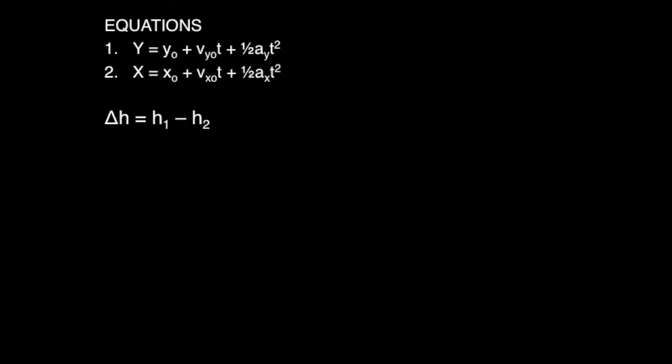First, we need to find the change of height from the player to the net in order to find the angle. Height 1 is the height of the player and height 2 is the height of the net. The change of height is 0.8 meters.